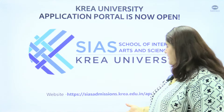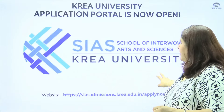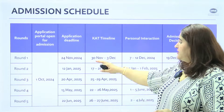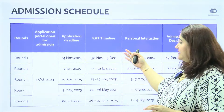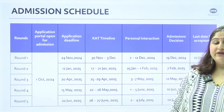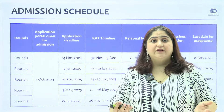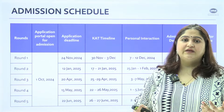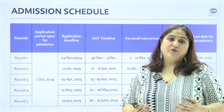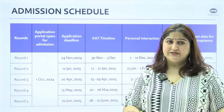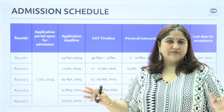The CREA University application portal opened on the 1st of October. The link will also be mentioned in the comment section. This is the schedule, which is extremely crucial. There are five rounds in total — the first deadline is the 24th of November and the last deadline is the 22nd of June. If you are aiming for the 24th of November, start your application as soon as possible and submit it before the deadline.